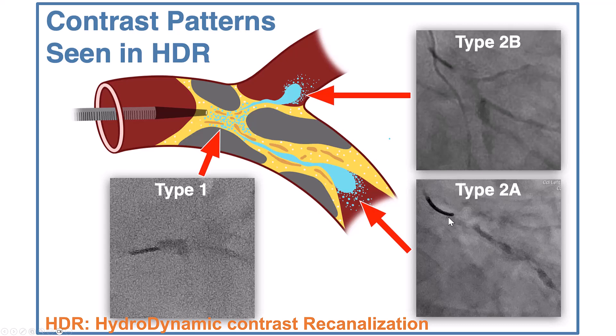Type 2A is when the contrast crosses into the distal true lumen. Type 2B is when it crosses into side branches.